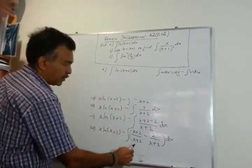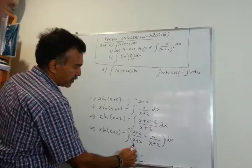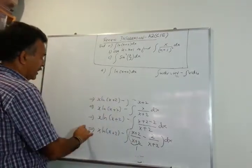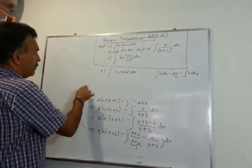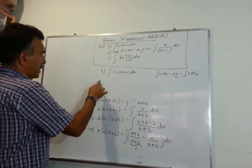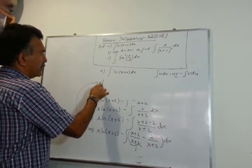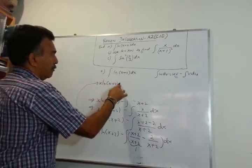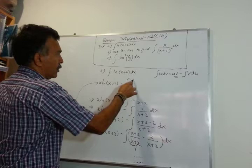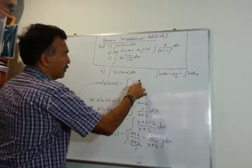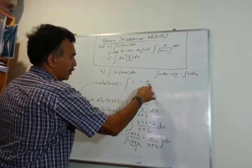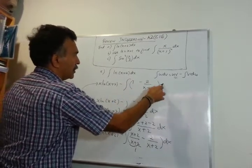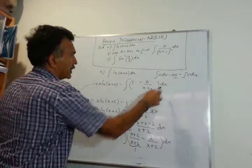You notice that (x+2)/(x+2) is 1. So I can write x·ln(x+2) minus the integral of 1 minus 2 over (x+2) dx.